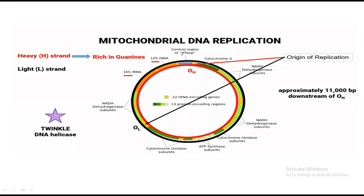There is a control region also known as the D-loop — I will explain why it is called a D-loop in a later video. There are two chains of mitochondrial DNA: the inner chain, also known as the heavy chain because it is rich in guanine, and the outer chain, known as the light chain because it does not have a high amount of guanine nucleotide bases.